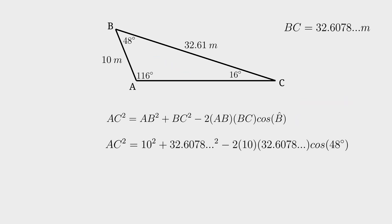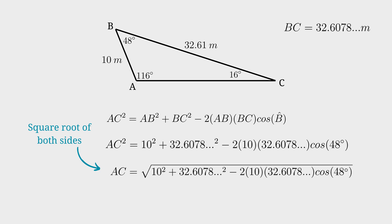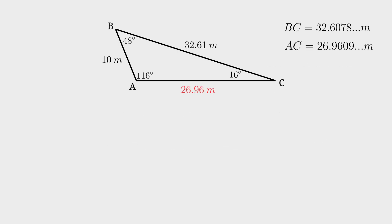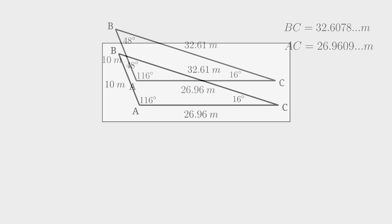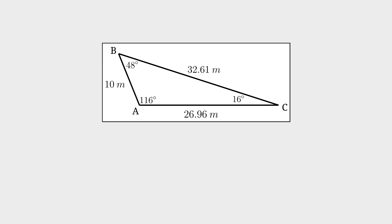Substitute your values into this formula and isolate for AC. Take the square root of both sides to cancel out the exponent of AC and type this into your calculator. You will then get 26.9609 meters and round it off to two decimals. It's 26.96 meters. And there you have all the lengths and angles for this triangle ABC.